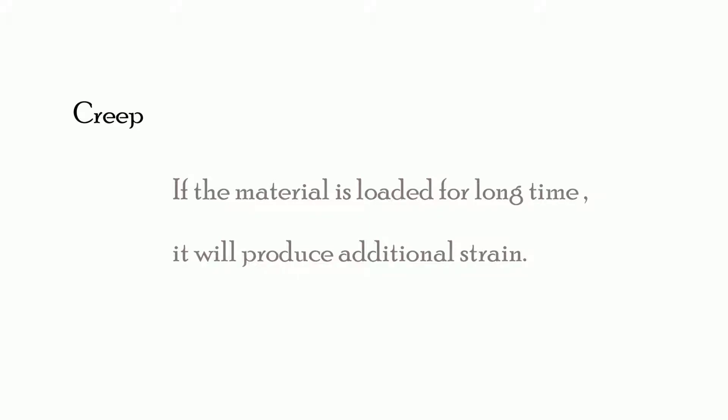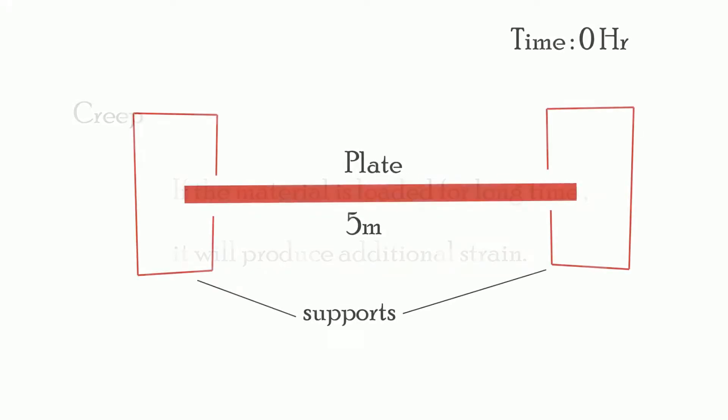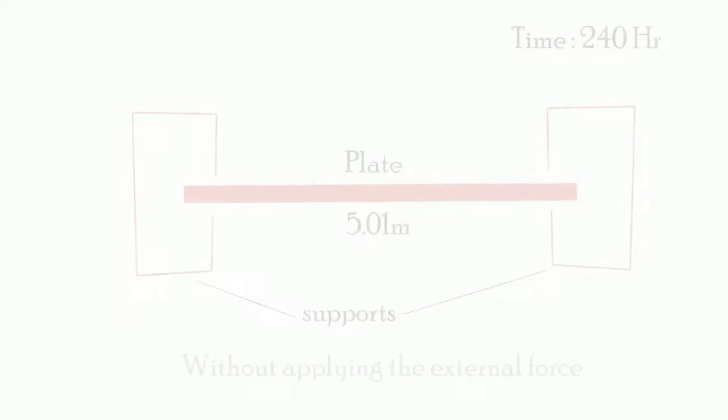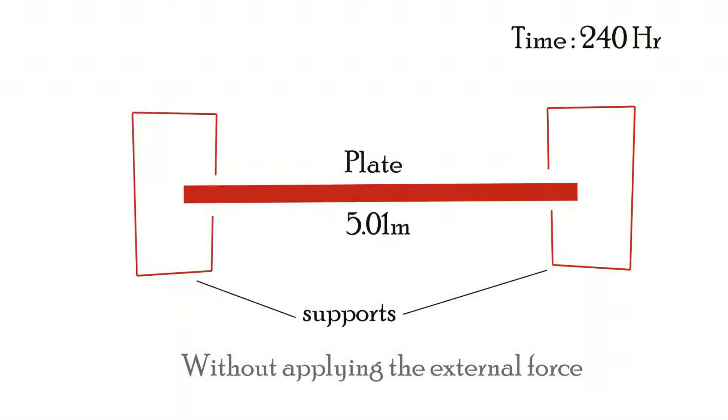As an example, the wire is stretched by two fixed ends. It feels a certain amount of tensile stress. Over the period of time, the stress disappears due to the extension of the wire. This deformation is dependent on time.